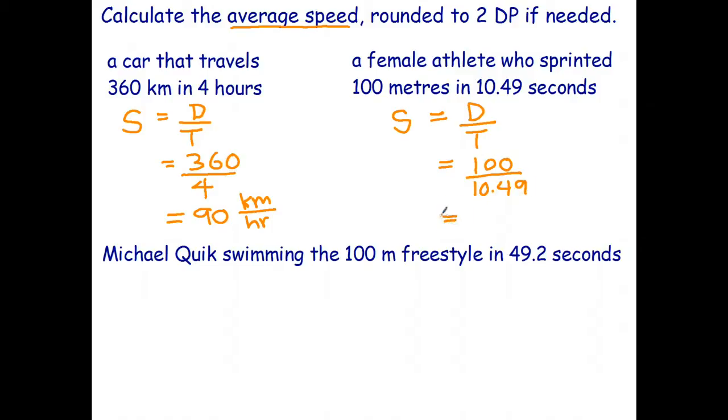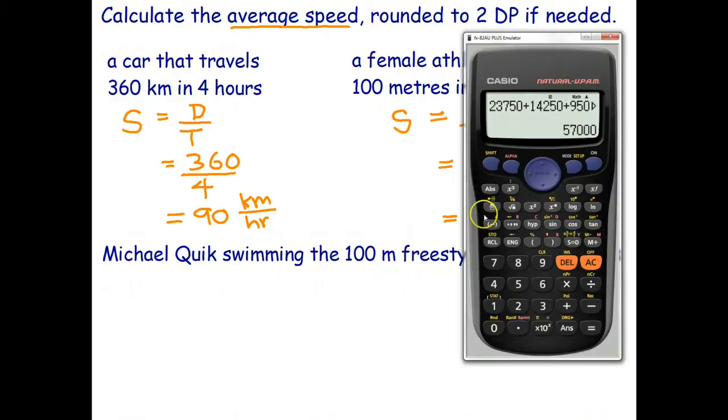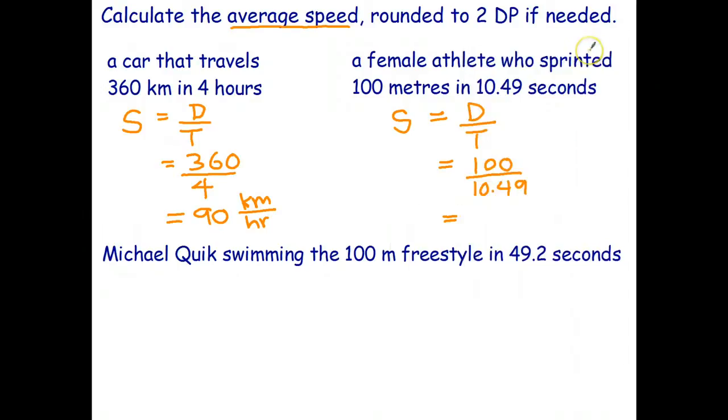100 divided by 10.49, and 9.53 if I round to two decimal places. So 9.53, and in this case it's meters per second.